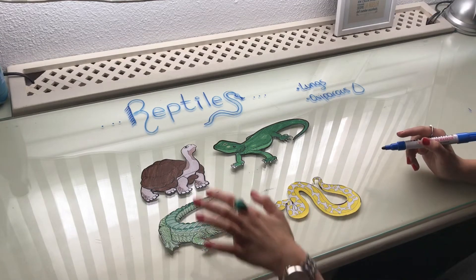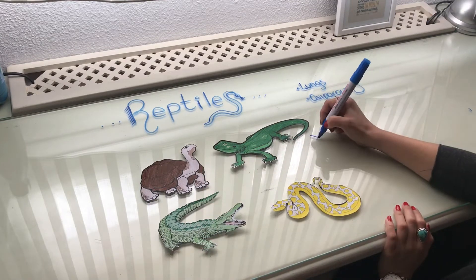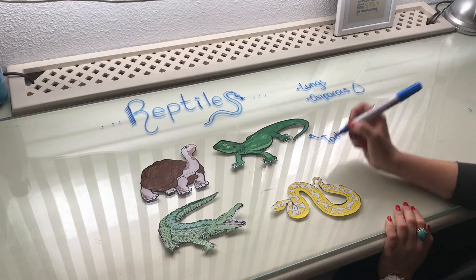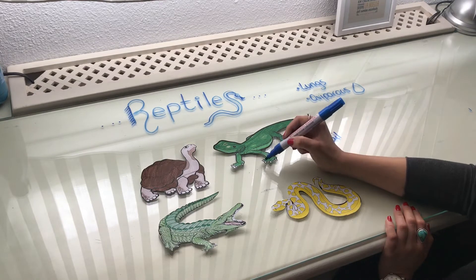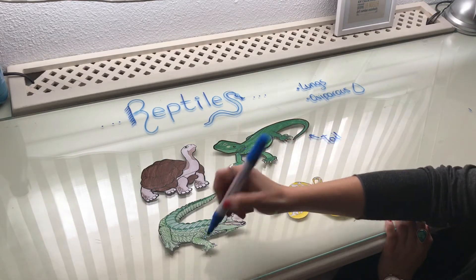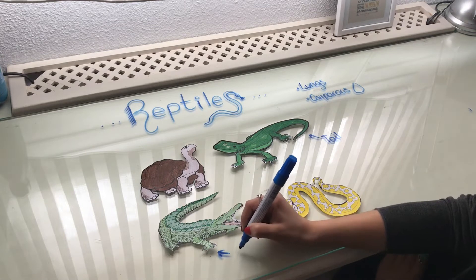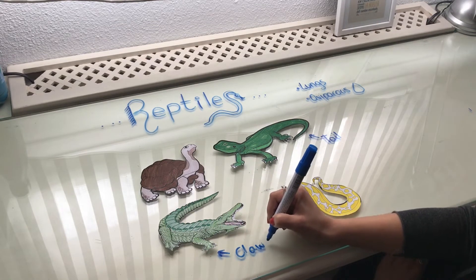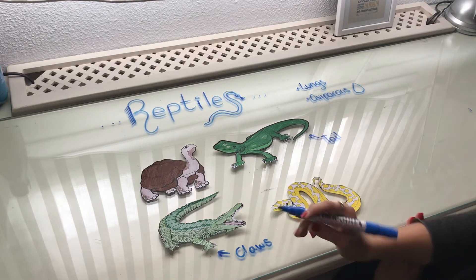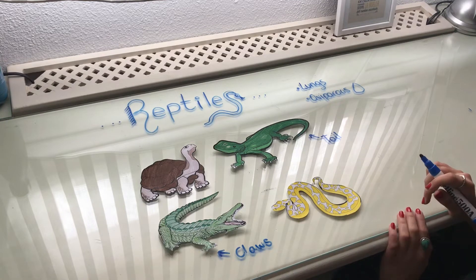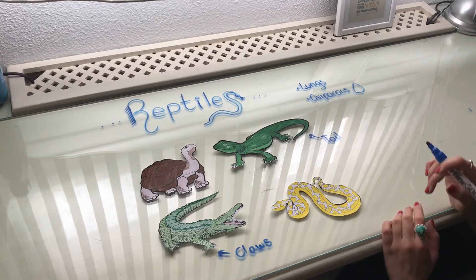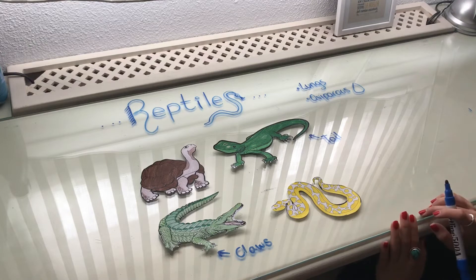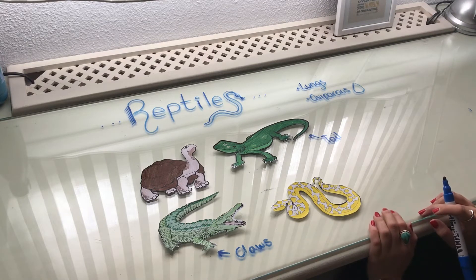Why? Because most reptiles have tails, and all of them have very sharp claws. They have very sharp claws to help them catch and hunt their prey and to protect against predators.